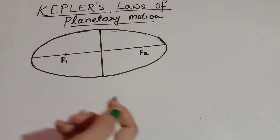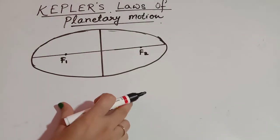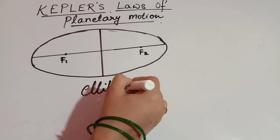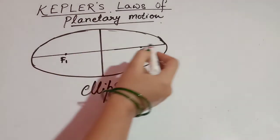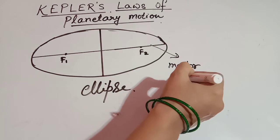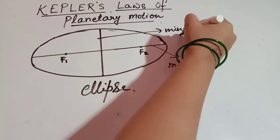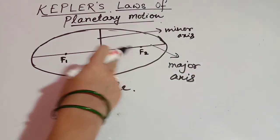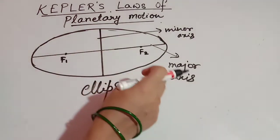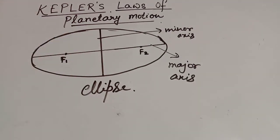Kepler's laws of planetary motion — there are three laws. First, understand what an ellipse is. This shape is known as an ellipse, and there are two axes: the major axis and the minor axis. There are two foci, f1 and f2, located on the major axis.